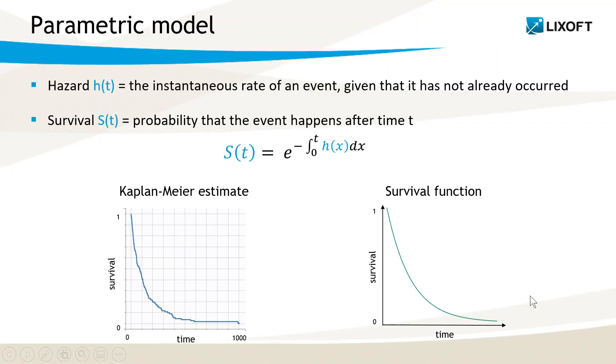Two functions have a key role in time-to-event analysis: the Hazard function and the Survival function. The Hazard function H is the instantaneous rate of an event given that it has not already occurred. The Survival function S is the probability that the event happens after time t. Both are linked by the equation displayed here.